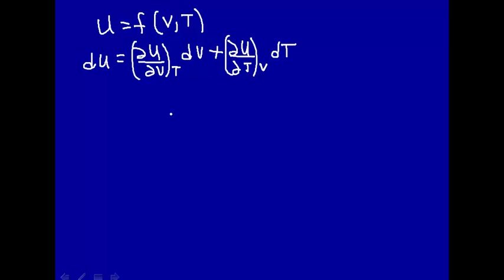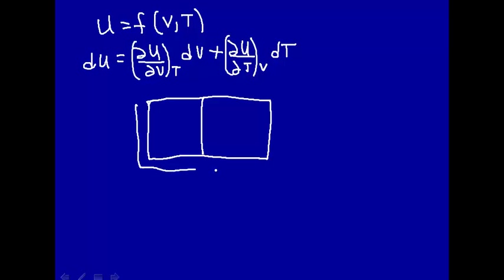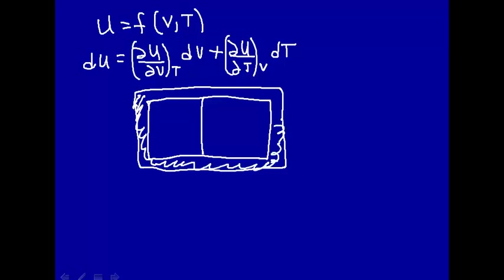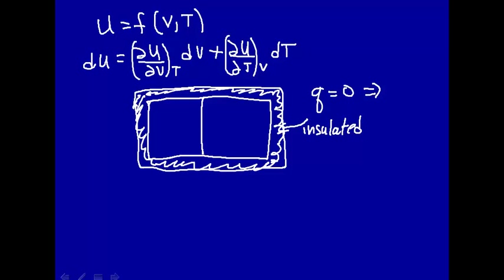Let's consider the following expansion of an ideal gas. Here we have a container with a partition, and the container is insulated so there's no heat that can be transferred to or from the surroundings. Over here we have some gas at some pressure, and over here we have a vacuum — and this is an ideal gas.